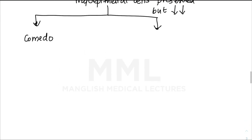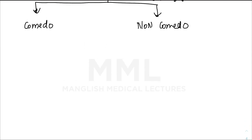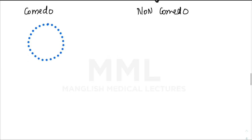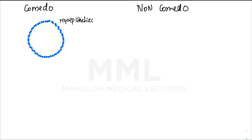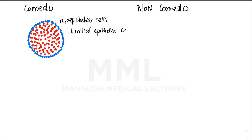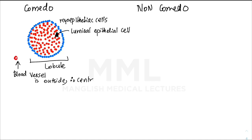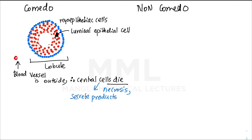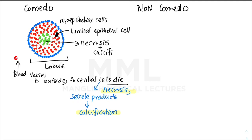The types of DCIS are comedo and non-comedo. In comedo-type, the luminal cells proliferate inside the lobule. Since blood supply is outside, the central cells don't receive blood and undergo necrosis. Additionally, these cells secrete substances leading to calcification. So the histologic appearance of comedo-type DCIS is central necrosis and calcification.